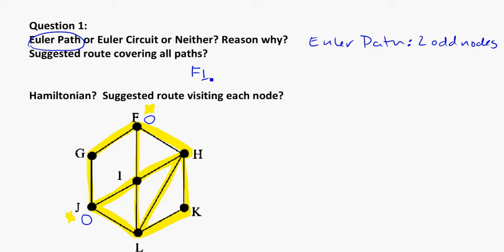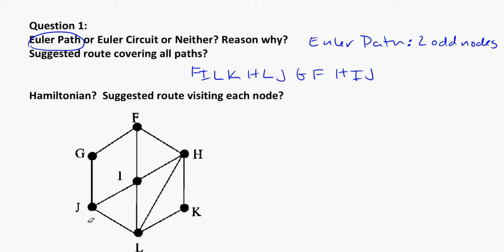So that was F, I, L, K, H, L, J, G, F, H, I, J, I think. Yep, that works. So there's the path written out. It is Euler path. It starts and stops at F and J. And the reason it's an Euler path, there's the two odd nodes. So I'm going to erase my highlighting there and actually erase the odd and even bit as well.